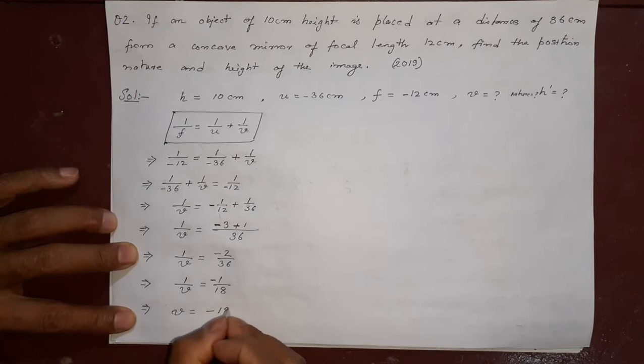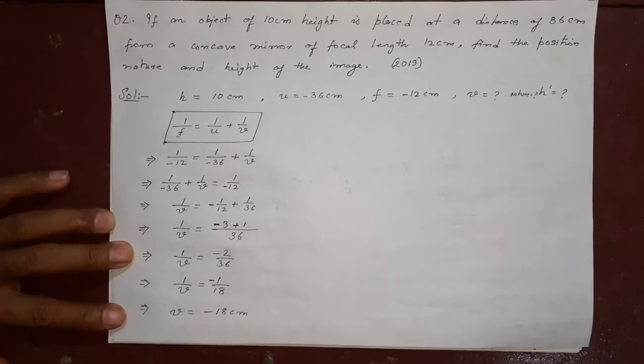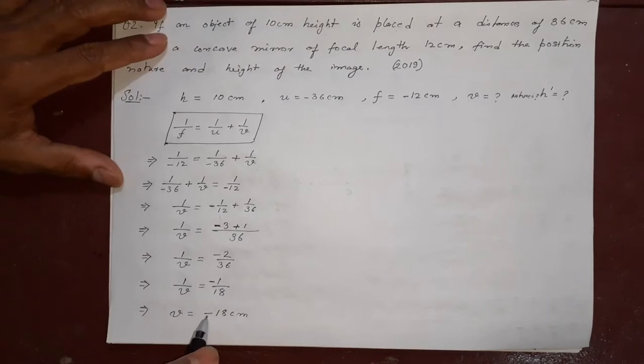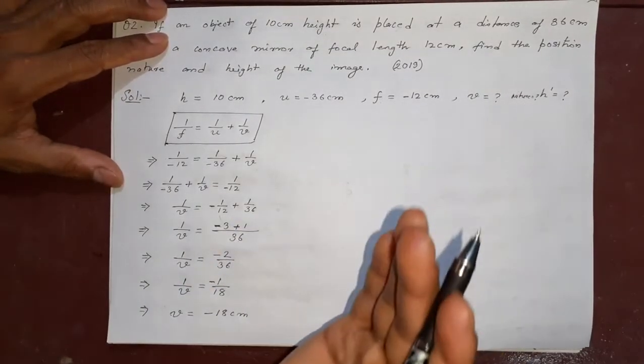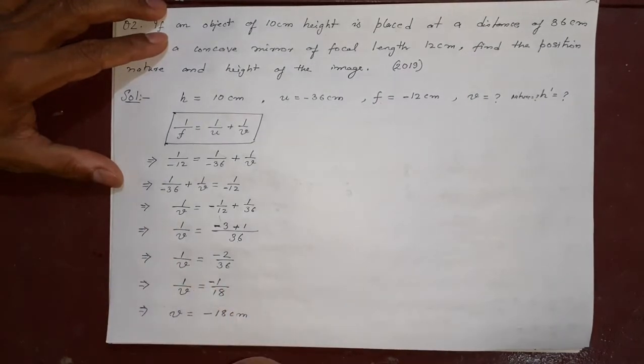So image is minus 18 centimeter away on the left side. Left side means because minus sign is coming. Now what is the nature? On this side in a concave mirror always you will get real and inverted image.